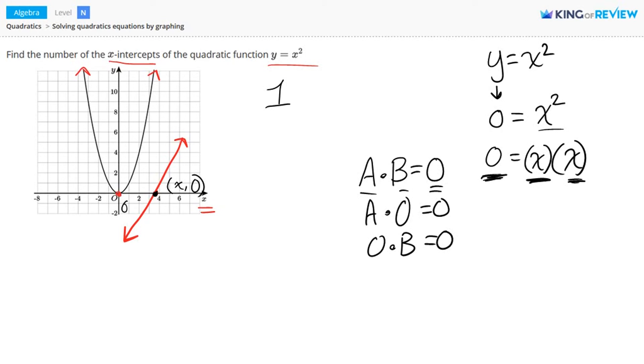So we'll set each of them equal to zero, but since they're the same term, we only need to write them down once. So x equals zero. So we know that our x-intercept is at the point x equals zero, and that's right here. And that's what the graph shows too. So there's one x-intercept.